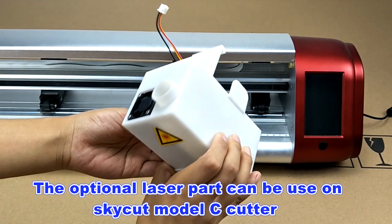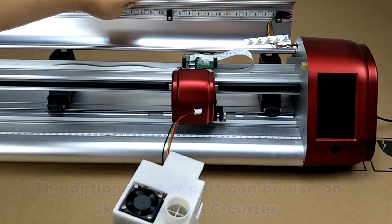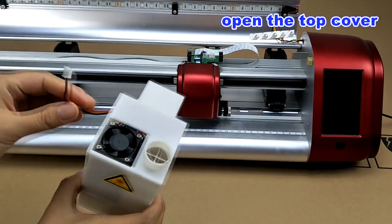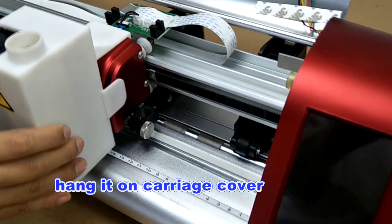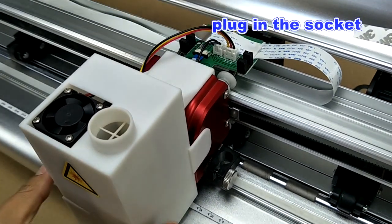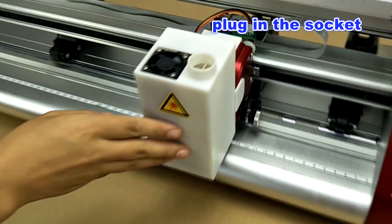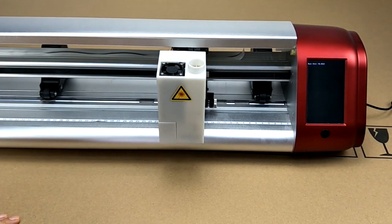This is our optional laser part. Now let's put the laser part on the cutter. Open the top cover and hang it on the carriage cover, and then plug in the socket. That's all. It's very easy to put the laser part on.